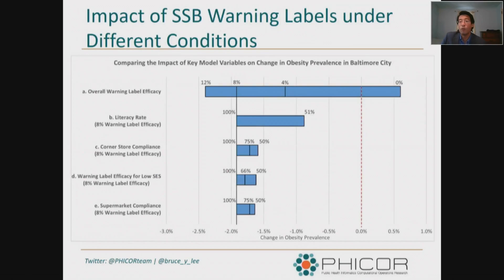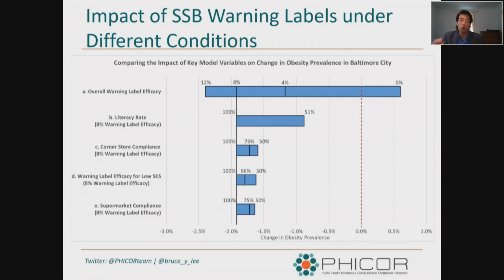We also ran sensitivity analyses varying things like warning label efficacy, literacy rate, and corner store compliance. Once you have the simulation set up, you can test what happens if you vary different aspects of the policy or the circumstances — this helps identify potential drivers of the policy intervention. Many times that's even more important than predicting exactly what will happen. Modeling isn't a crystal ball, but you can get a sense of what the relationships are and what's really driving the results, since exact point prediction may not be accurate but directional understanding is valuable.